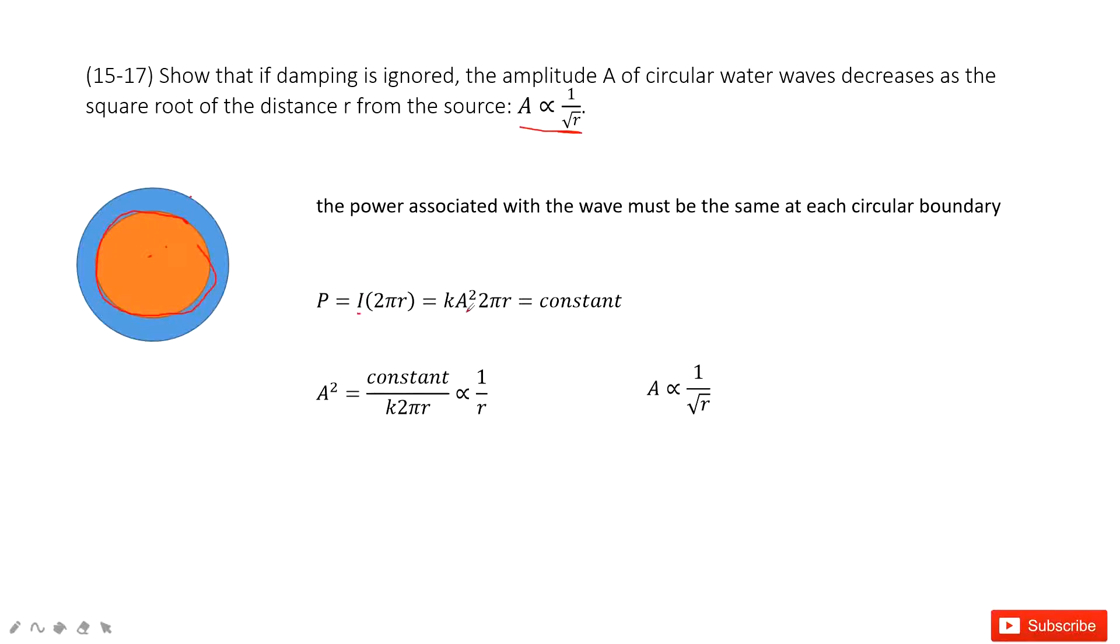Intensity I is k times A squared times 2πr. A is the amplitude. It moves upside down.